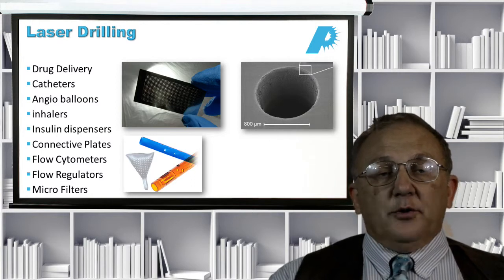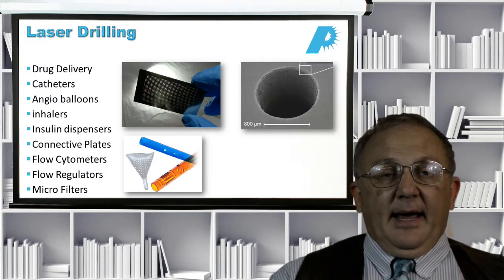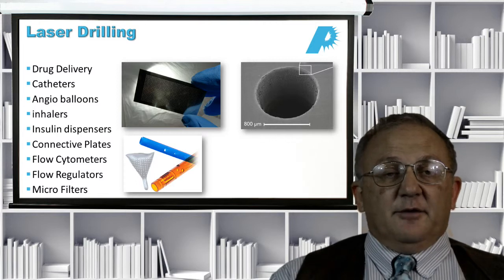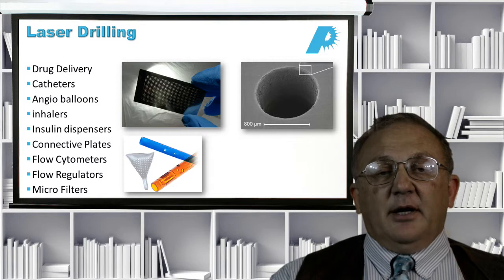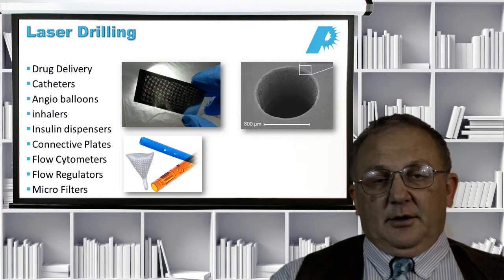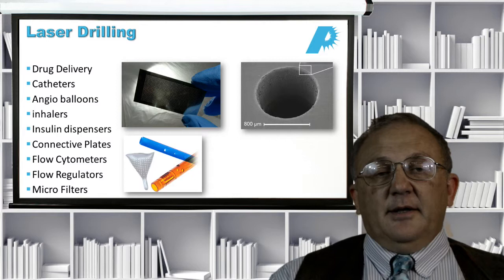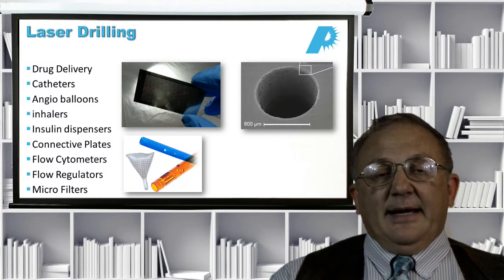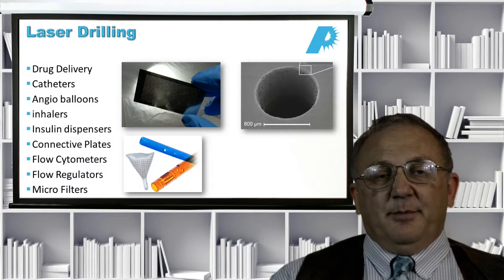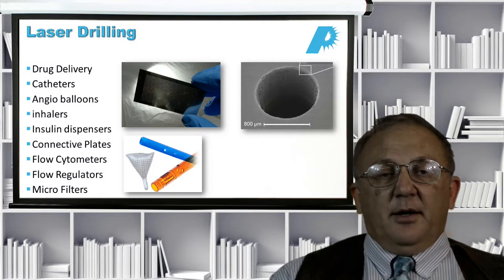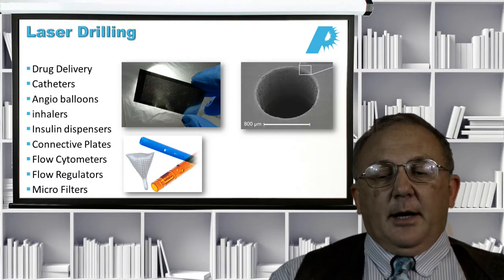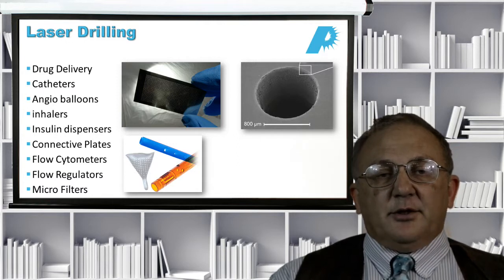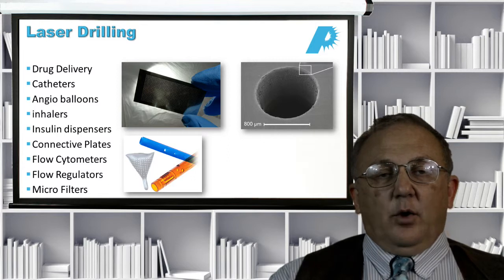We're looking at drilling holes, very small holes, for inhalers, for instance, for insulin dispensers. And the hole size has to be regulated very closely for things like breathable insulin, because the insulin that gets through has to be large enough so that it's actually captured by the lungs and not expelled in your next breath, but small enough that it can actually be dissolved by the lungs. So, there's a very tight tolerance range of what these holes can actually be in order to make the devices work.